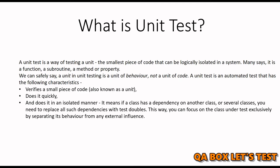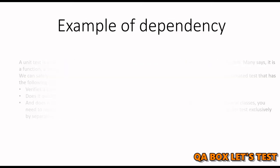There are various test doubles available — we can spy a method, we can stub, we can mock, use fakes, and dummies. With the help of isolation, we can focus on the class under test exclusively by separating its behavior from any external influence. For example, if a function's job is to return a string pulled from a database using an external library, and you do not segregate the library from your function, you are not testing it in isolation. Your unit test case could fail because of a bug in that library, so we have to separate our dependencies.